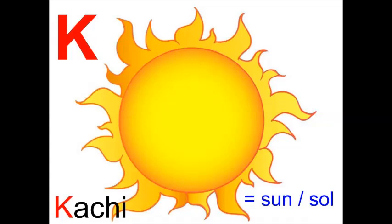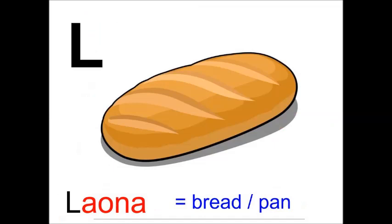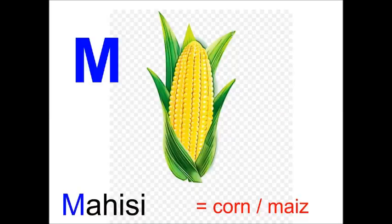Ka can also be pronounced as 'ga' in between vowels, that is, in the middle of words. También se puede pronunciar como 'ga' entre vocales, es decir, en media palabra. La. Launa. Ma. Mahisi.